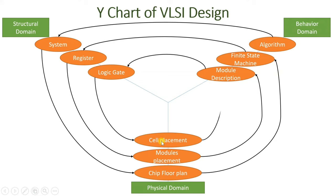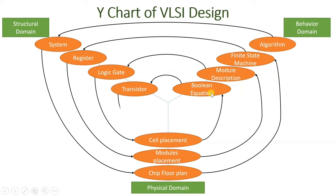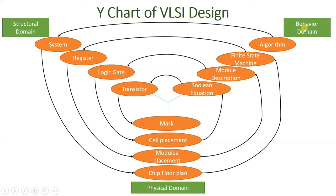After cells placement in the physical domain, we define Boolean equations in the behavioral domain. With respect to Boolean equations, in the structural domain there will be transistors functioning and providing the operation of the Boolean expression. Once it is justified and functioning properly, there will be masking, where we provide connections that identify the working of the integrated circuit. That is how the complete flow is there in VLSI design with three different domains — behavioral, structural, and physical.